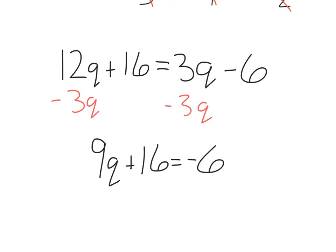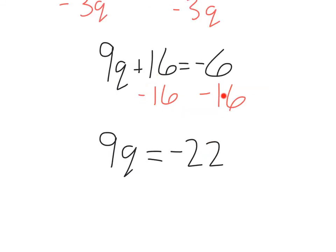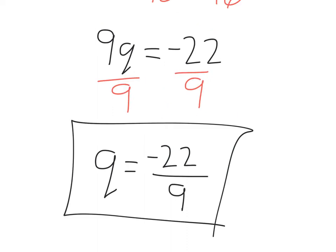Now we just need to solve. Subtracting our 3q over gives us 9q plus 16 equals negative 6. Then, moving the 16 over to the right, subtract it, 9q equals negative 22. And dividing that 9 out, we get q equals negative 22/9.